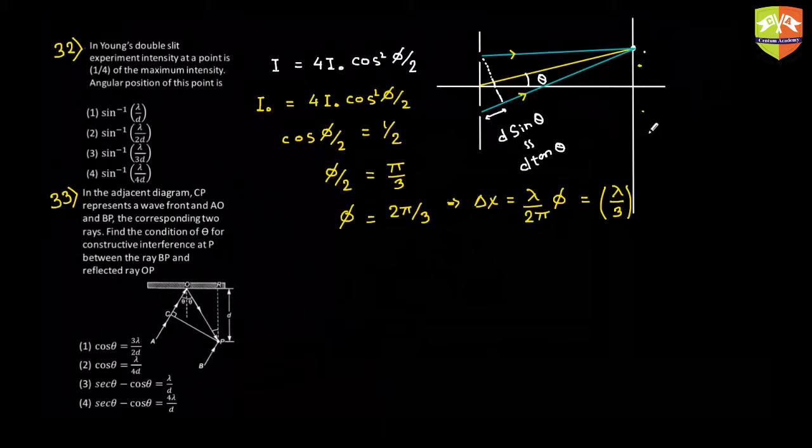Now d sine theta, if you equate that to lambda by three, you will get theta is equal to sine inverse of lambda by three d. That's why option three is correct over here.